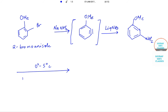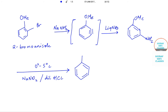At 0 to 5 degrees Celsius, with NaNO2 and dilute HCl (hydrochloric acid), the amine is converted to a diazonium salt. So here we have oxygen and methyl, and the diazonium chloride N2Cl is formed.